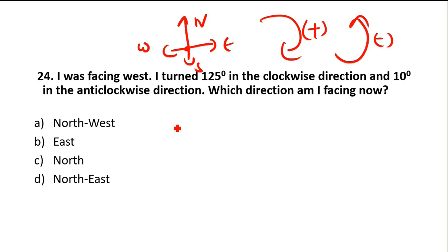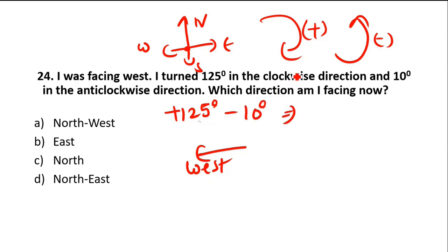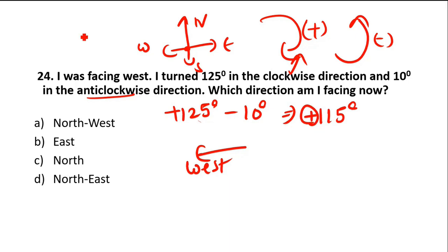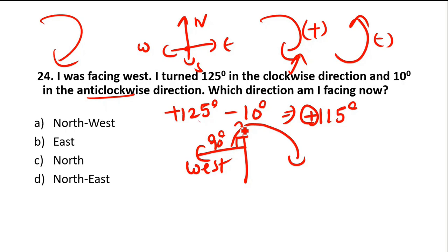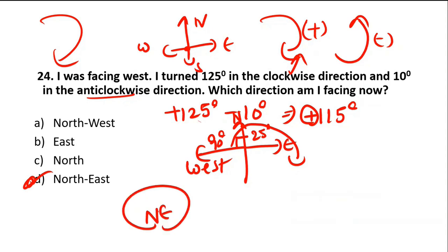The person is facing West initially. They turn 125 degrees clockwise — that is plus 125 — and 10 degrees anticlockwise — that is minus 10. So plus 125 minus 10 equals plus 115, which is a positive angle, meaning clockwise. From West, rotating 90 degrees clockwise crosses North, and the remaining 25 degrees places you in the Northeast direction.